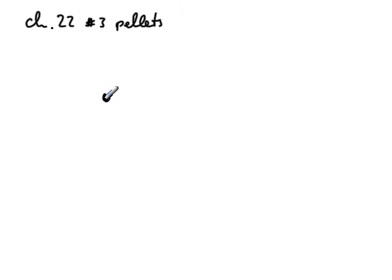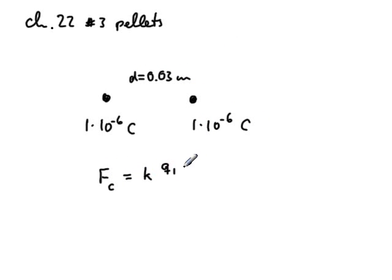So basically we have two pellets and each of them has a charge of 10 to the negative 6 coulombs, and they're a distance of 0.03 meters apart, and we're supposed to figure out what the force is. Of course, according to Coulomb's law, so F_C equals K times Q1 Q2 divided by D squared.